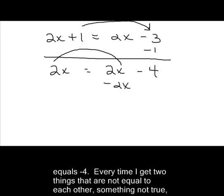and I subtract my 2x from both sides, I end up with 0 on the left and minus 4 on the right.